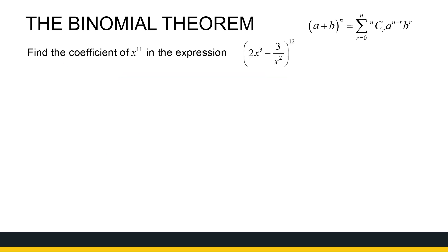In the next one, we're asking a very specific question: find the coefficient of x to the power 11. Now, I don't know which term that's going to be. I need to figure out when do I get to x^11, because here's an x cubed and here's an x to the power −2. So when will I get to x^11? We start the same way — we look at what it looks like in general.